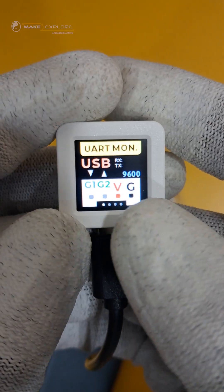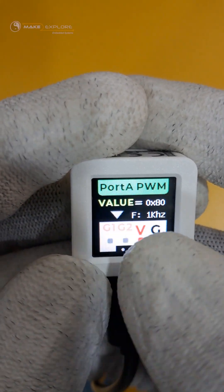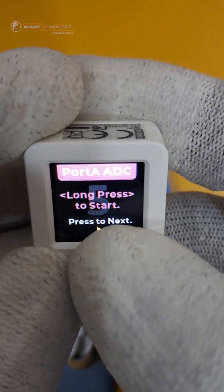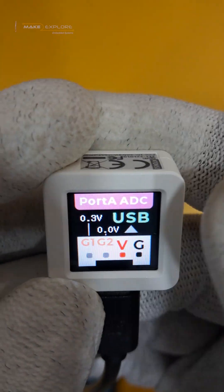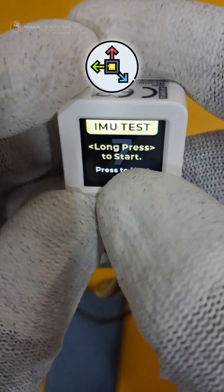Then it also features UART monitoring. Then PWM on port A. Then next, ADC of port A. Infrared transmission function. And finally, a very cool demo of the IMU sensor.